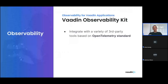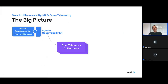Last but not least, Observability Kit is based on the OpenTelemetry standard, which allows you to integrate this with a variety of third-party tools that you might already be using or might be interested in. This is basically where Vaadin Observability Kit fits into the bigger picture: you have your Vaadin applications, and Observability Kit integrates in those as an add-on, focusing on the core task of collecting traces, metrics, and data — pulling out all that data from the client-side, from the browser, from the Vaadin internals — and forwarding that to OpenTelemetry collectors.